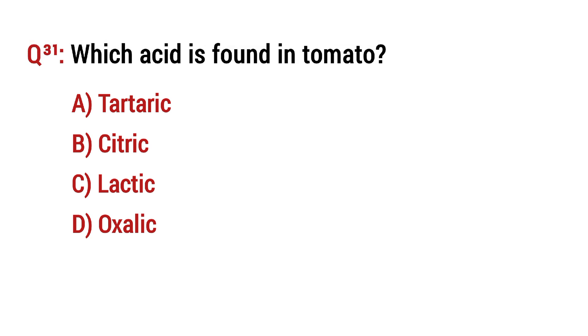Question number 31: Which acid is found in tomato? The right option is D: Oxalic acid.